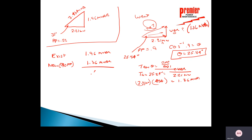The existing system had 1.96 megavars. The new 0.9 power factor system needs only 1.36 megavars. The difference is 1.96 − 1.36 = 0.60 megavars. So 600 kVAR of capacitance is needed to make that correction. That's a good level-three or level-four type question.